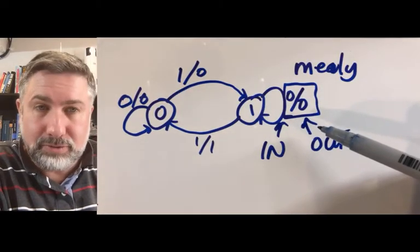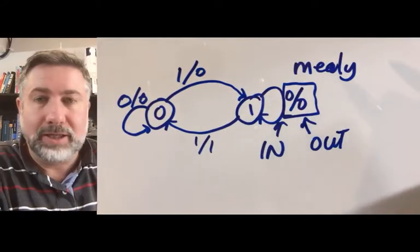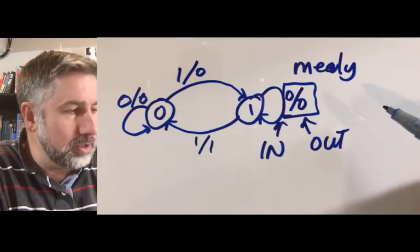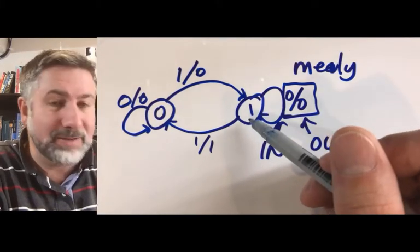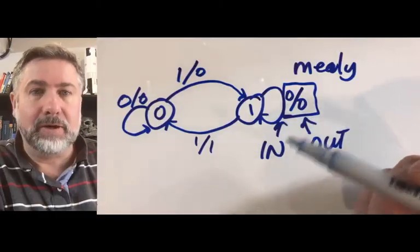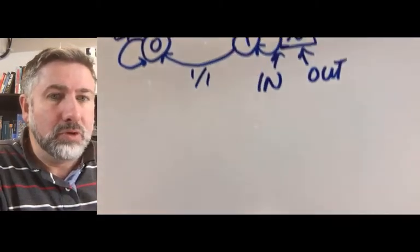The other way to do this, this would be a circuit that you would use when you want to allow different outputs for the same state depending on what the input transitions are. The other way to do this is a Moore machine.